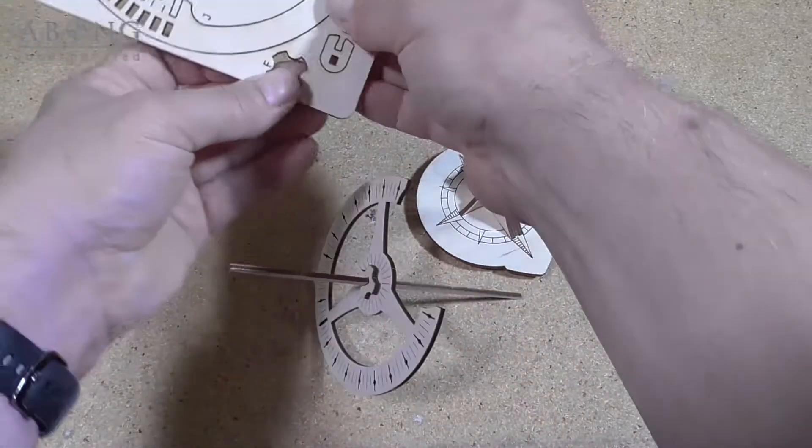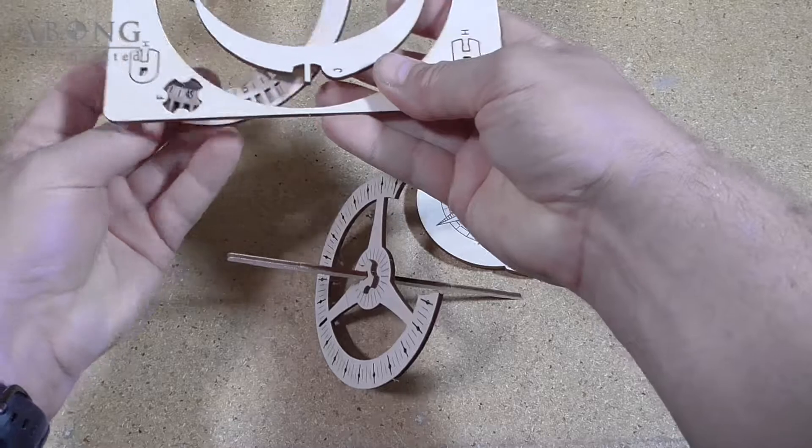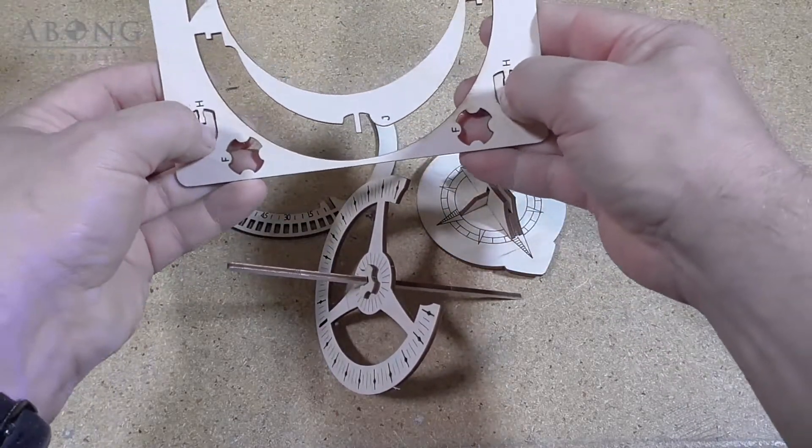So you can see that the dial is sandwiched between those two parts, the two parts F. So next, we're going to need the frame and the two parts H.